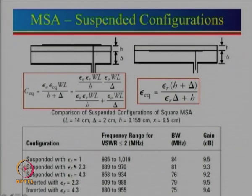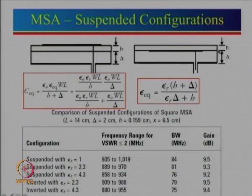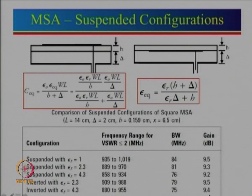Now let us look at the inverted configuration. In this case, the patch sees the air gap height δ, and the substrate above the patch acts as a superstrate. This can also be thought of as a radome — the substrate acts as a radome over the patch. Looking at performance: the gain is 9.5 and 9.4 dB — almost the same as the suspended configuration. Even with a lossy substrate, the reduction in gain is very small, confirming we can use a low-cost substrate.